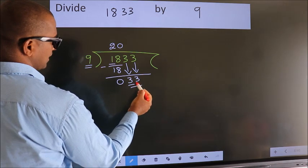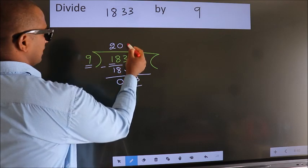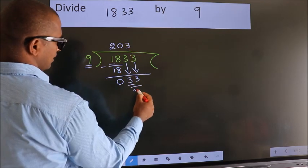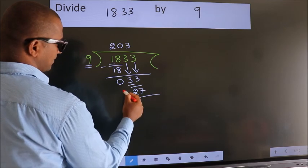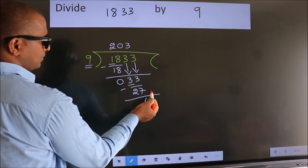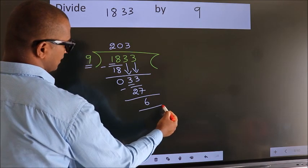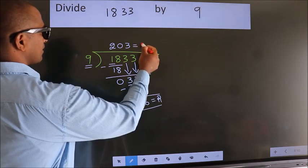So 33. A number close to 33 in the 9 table is 9 times 3, which is 27. Now we subtract. We get 6. No more numbers to bring down, so we stop here. This is our remainder. This is our quotient.